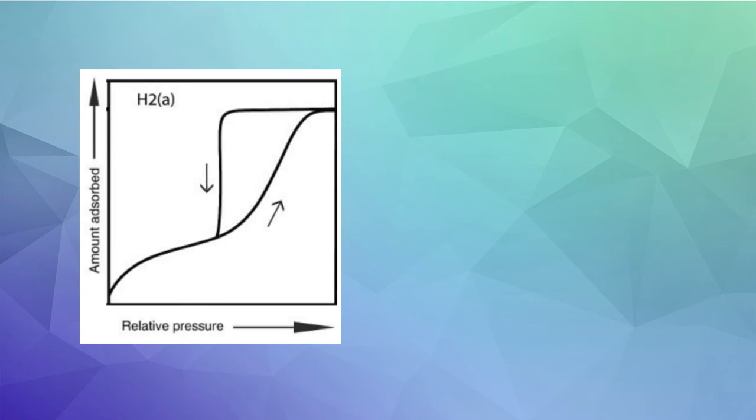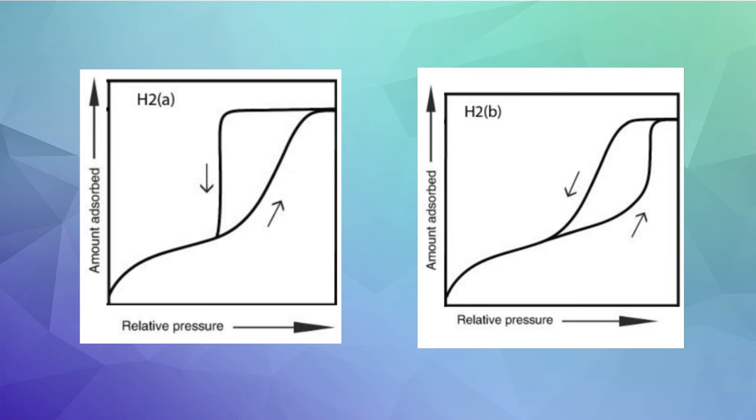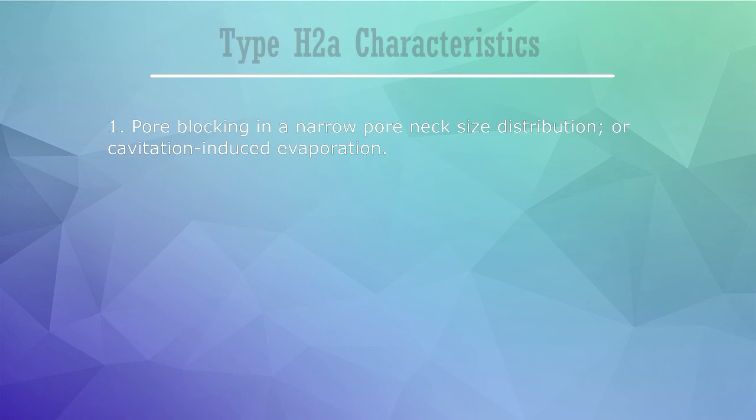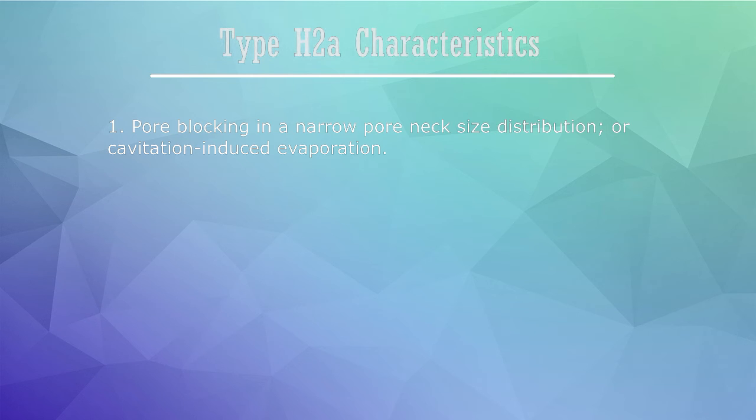In type H2, only one of the branches is steep, as such H2 is split further to two types. A steep desorption branch, that of type H2A, may indicate pore blocking in a narrow pore neck size distribution, or it may indicate that evaporation is due to cavitation.